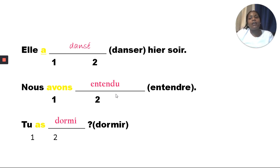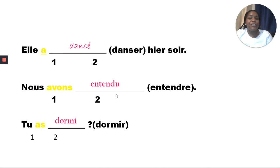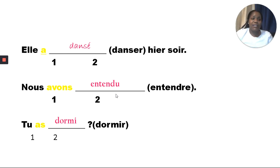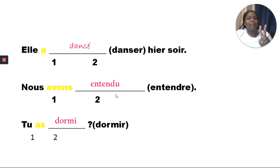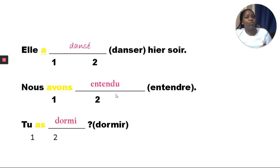Take note that under all of my auxiliary verbs I have the number one, and under the past participle I have the number two — as a reminder that to form the passé composé we need two parts: the first is our helping verb, and the second is our past participle. If you practice formulating your sentences using one and two, this will help you remember that you always need two parts.